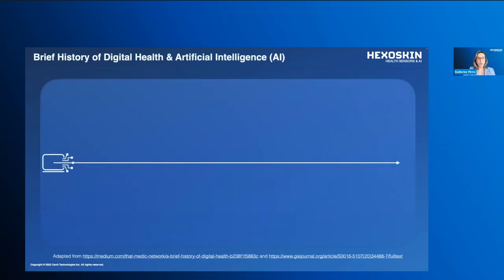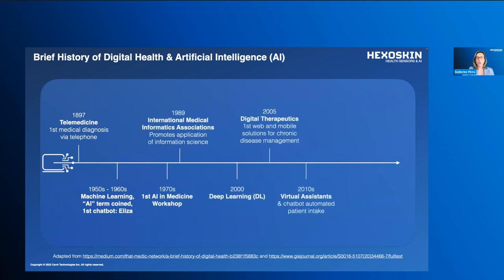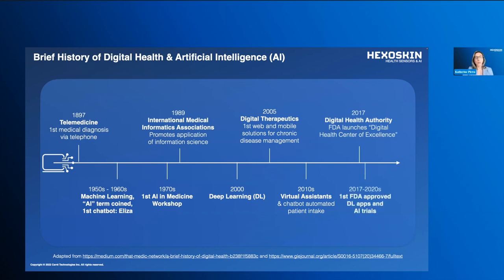The first uses of technology in medicine was in the late 1800s when the first medical diagnosis was given over the telephone. It wasn't until the 1950s and 60s that we started applying the concept that computers could be indistinguishable from humans at analyzing data, and as a result, machine learning and artificial intelligence were born. As technologies have advanced over the last 70 years, we've been able to collect and read larger sets of data, fueling the advancement of AI and deep learning, enabling digital solutions across healthcare — from mobile health to virtual assistants and chatbots. Most recently, we've seen the FDA's creation of the Digital Health Authority and their approval of deep learning for health applications and clinical trials.